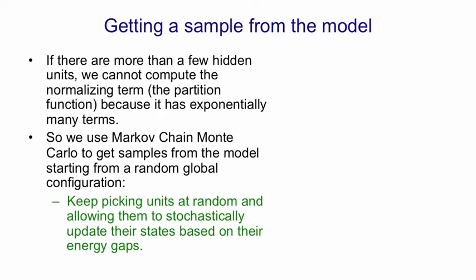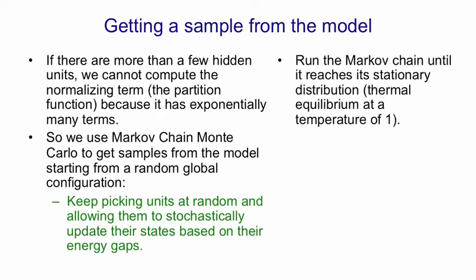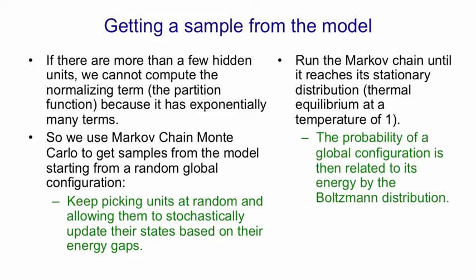Those energy gaps being determined by the states of all the other units in the network. If we keep doing that until the Markov chain reaches its stationary distribution then we'll have a sample from the model and the probability of that sample is related to its energy by the Boltzmann distribution, that is the probability of the sample is proportional to E to the minus the energy.